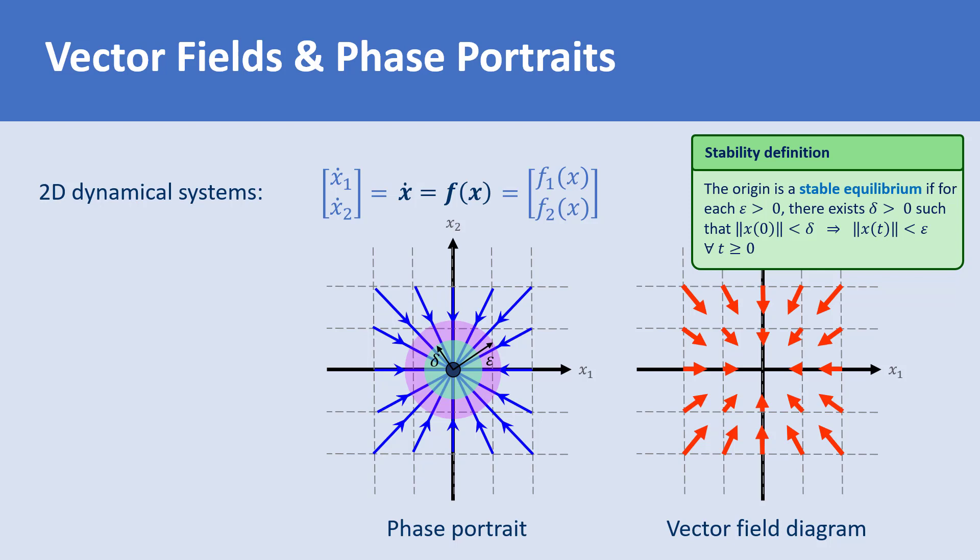To learn more about the stability definitions of an equilibrium, see the link at the top corner of the screen or in the description below. As shown in this example, we can extract information about the equilibrium points of a system and their stability properties.